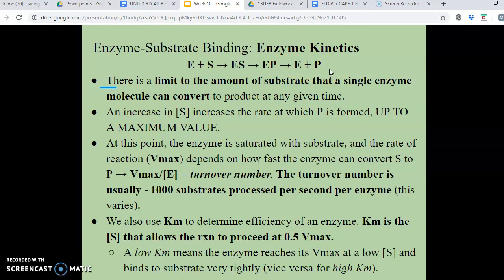So in the sense of how we can describe enzyme kinetics, this would be our basic enzymatic reaction pathway. E plus S yields ES yields EP, which yields E plus P. So from this reaction path, we can see that there's a limit to the amount of substrate that a single enzyme molecule can convert into product at any given time. So an increase in the concentration of the substrate will increase the rate at which the product is formed up to a maximum value. And so at this point, the enzyme is what we call saturated with substrate.